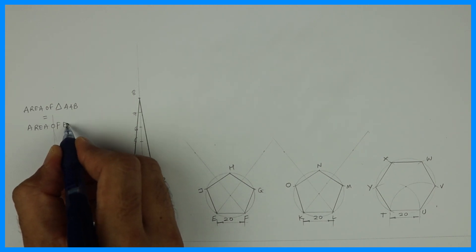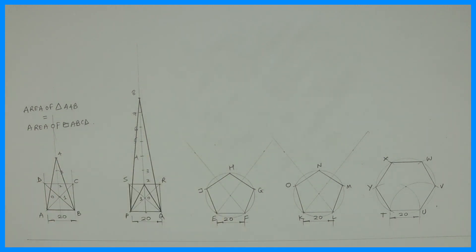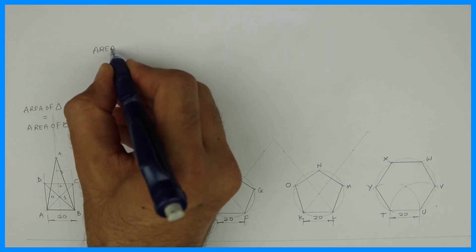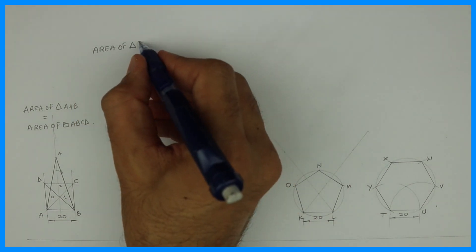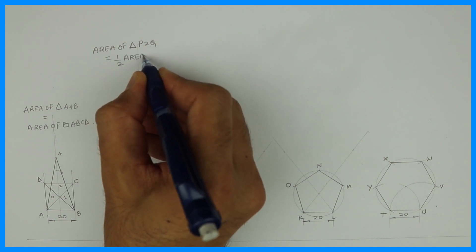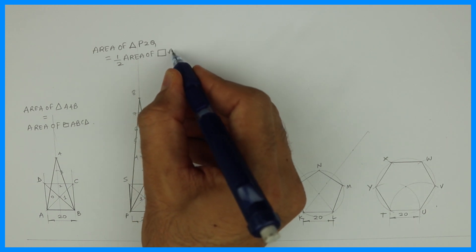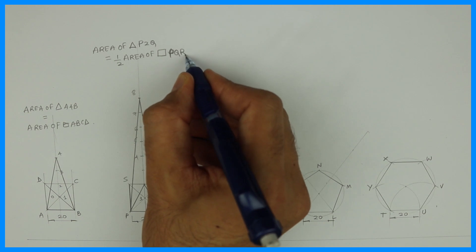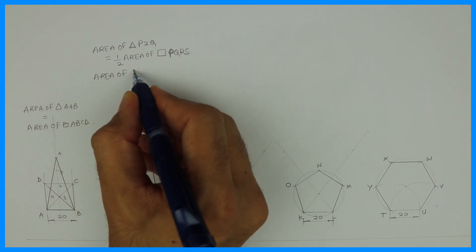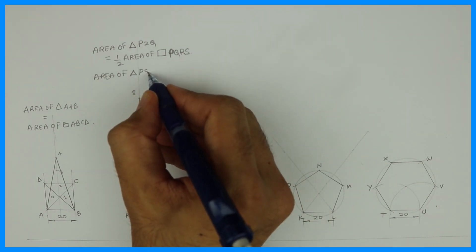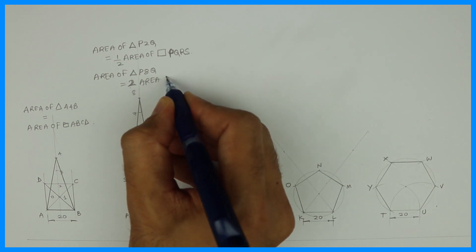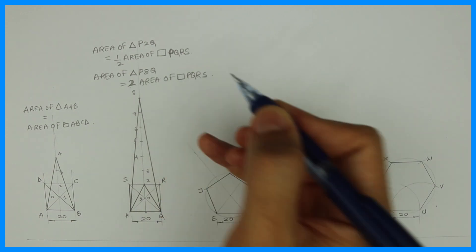So area of triangle A4B equals area of square ABCD in the first sum. Area of triangle A2P or P2Q is equal to half the area of square PQRS. Area of triangle P8Q is equal to double the area of square PQRS. So this is what we need to write.